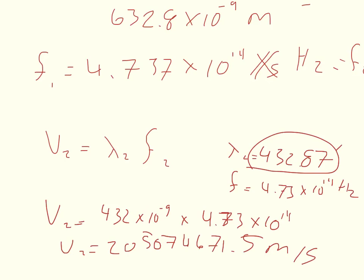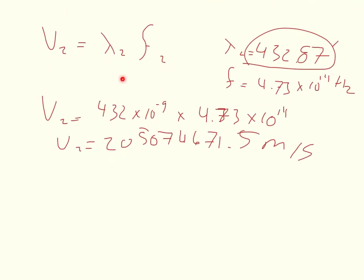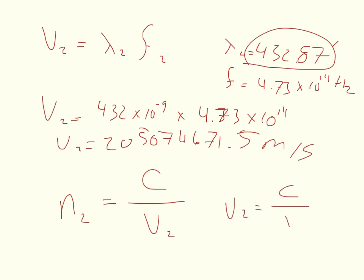There is another way to solve for the velocity. Remember the definition: N2 equals the speed of light divided by the velocity of light in the material. So V2 equals the speed of light over N2. This way you don't have to rely on previous equations for wavelength or frequency — you can jump straight to the velocity without worrying about unit conversions for wavelength.